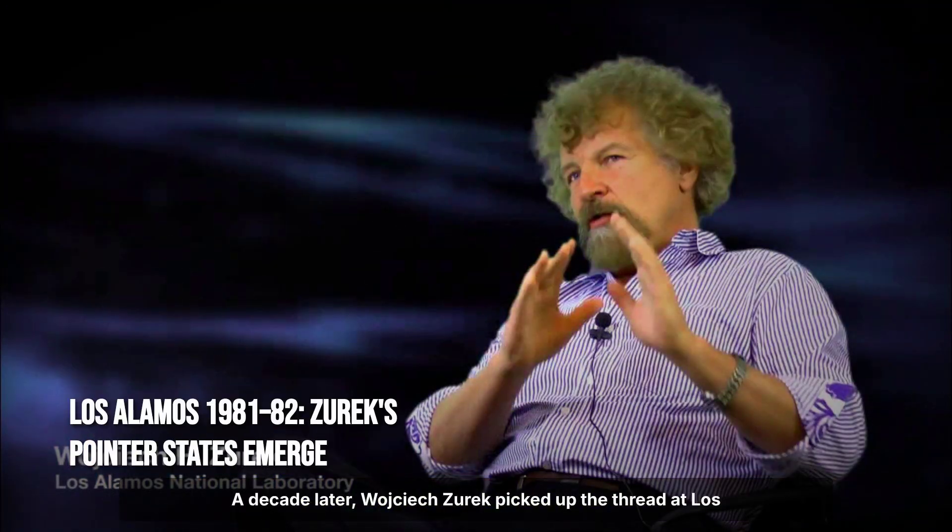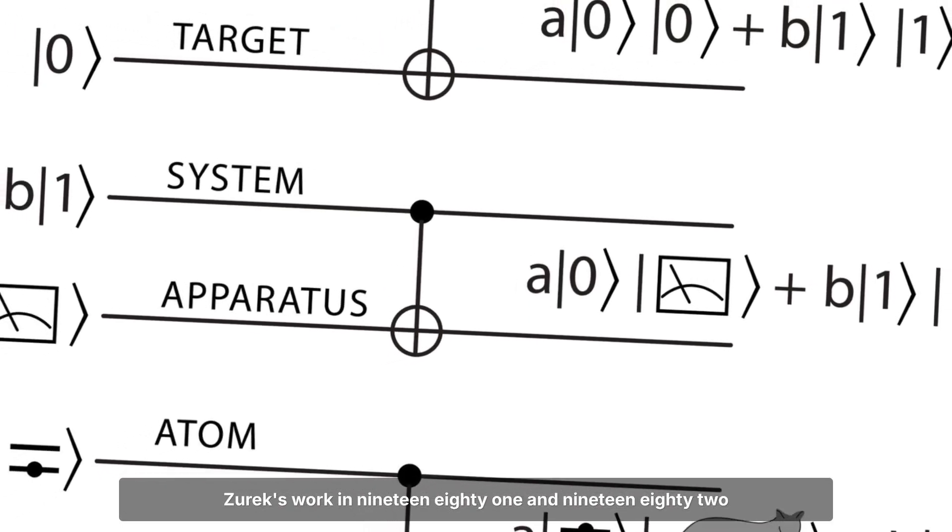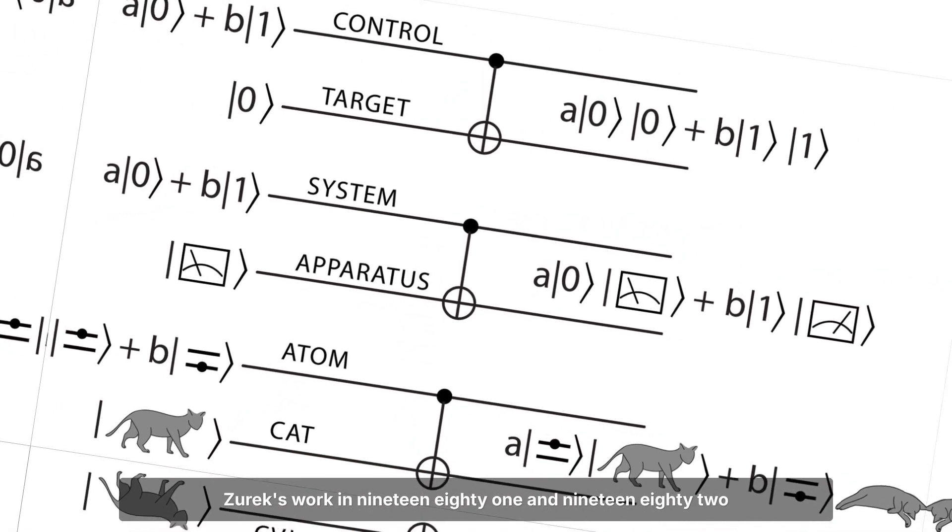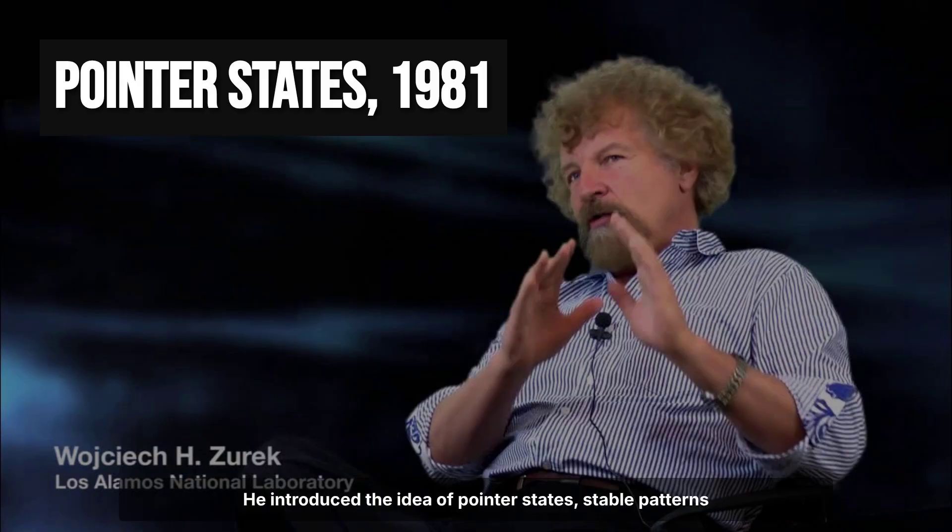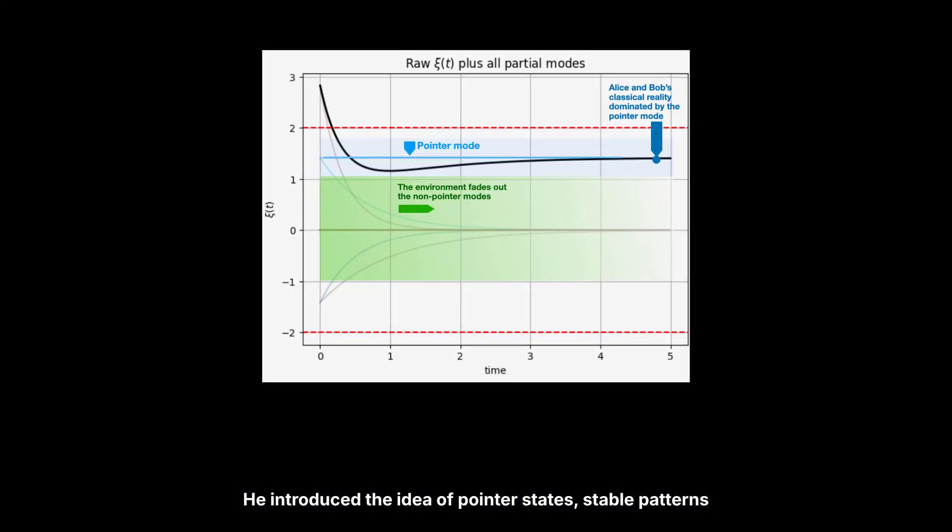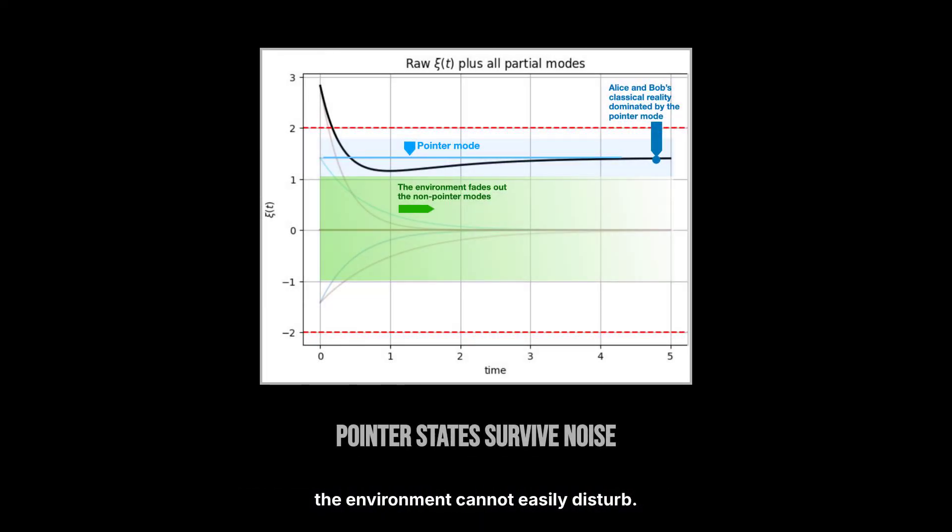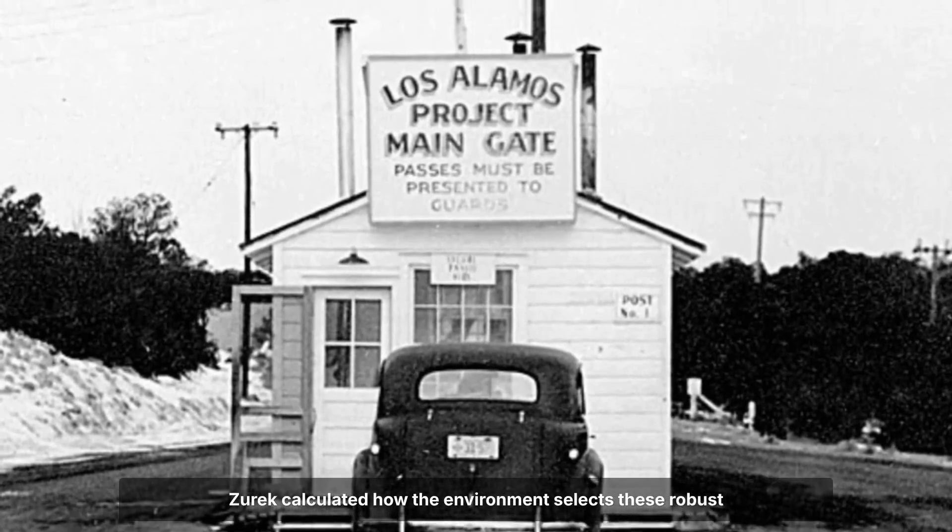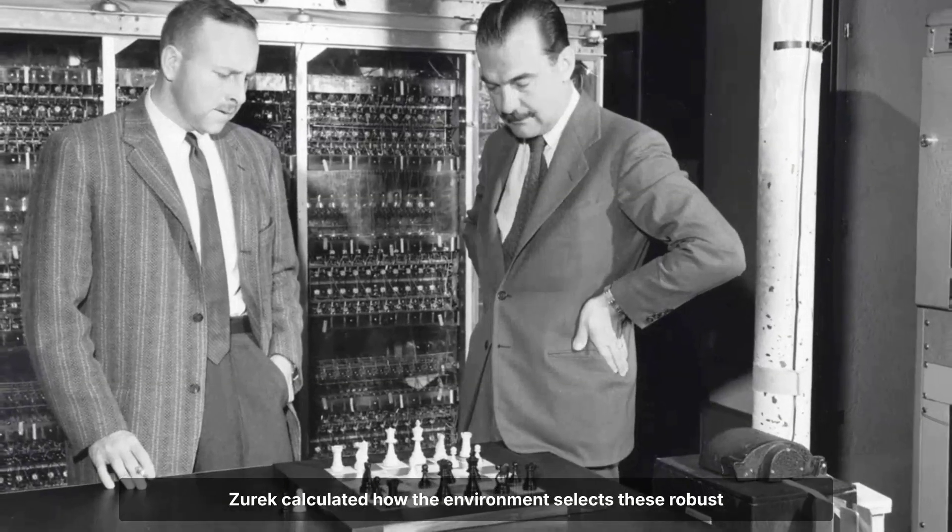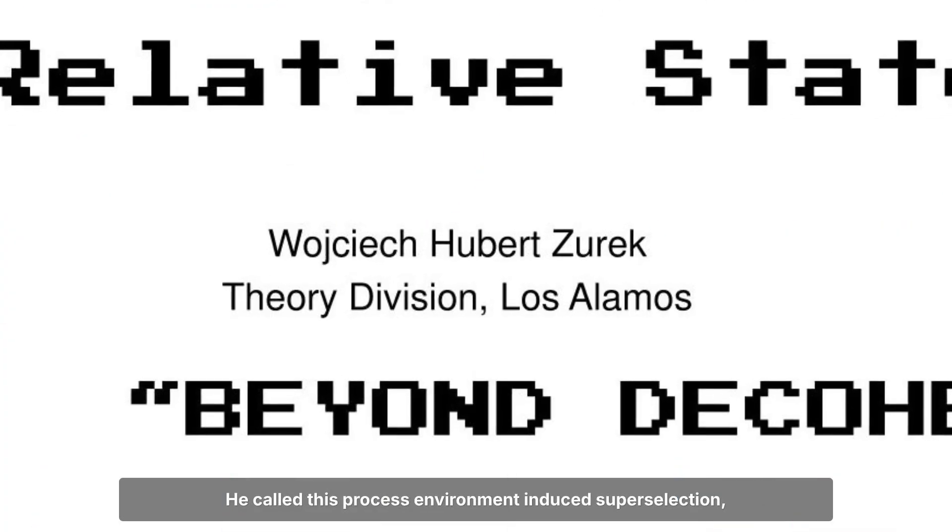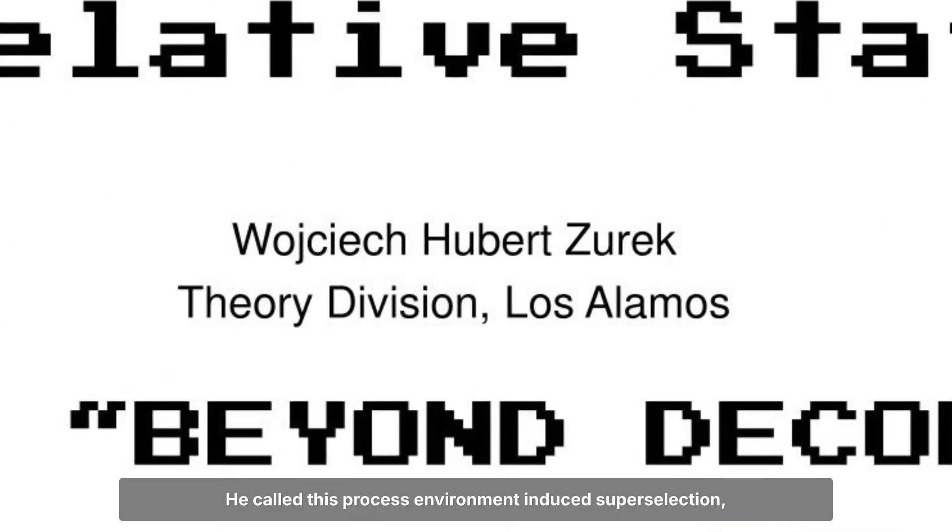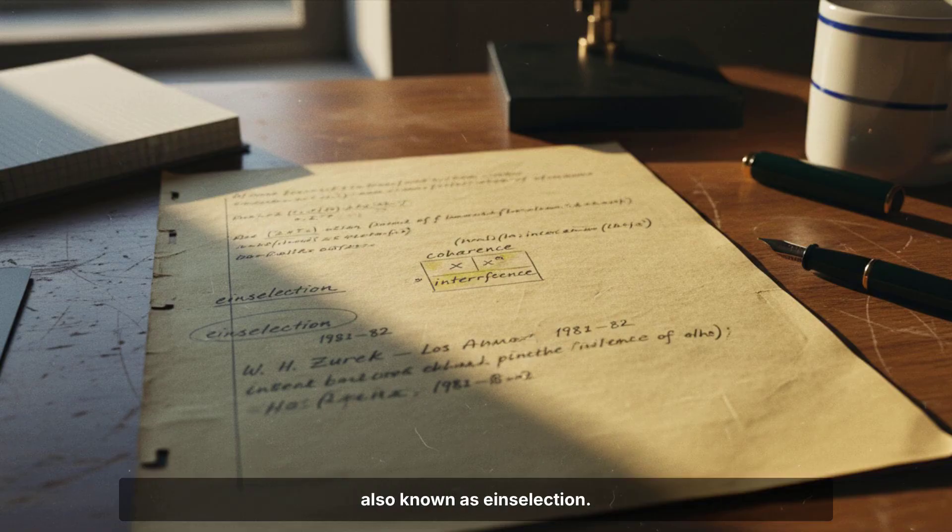A decade later, Wojciech Zurek picked up the thread at Los Alamos. Zurek's work in 1981 and 1982 gave decoherence a practical edge. He introduced the idea of pointer states, stable patterns the environment cannot easily disturb. Zurek calculated how the environment selects these robust states, forcing quantum systems to behave classically. He called this process environment-induced superselection, also known as einselection.